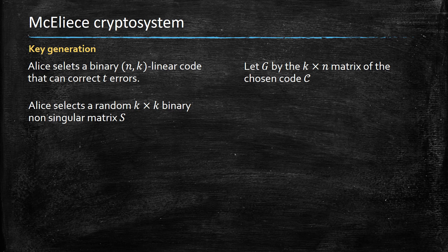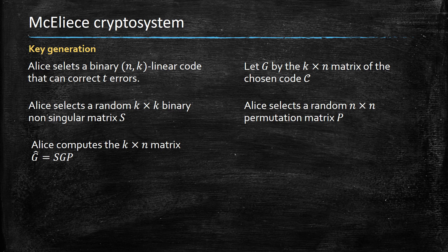To do that, we select a non-singular matrix of size k by k and a permutation matrix of size n by n. We compute the public key as S times G times P. The idea of the left and right multiplication is to obfuscate G by invertible matrices.